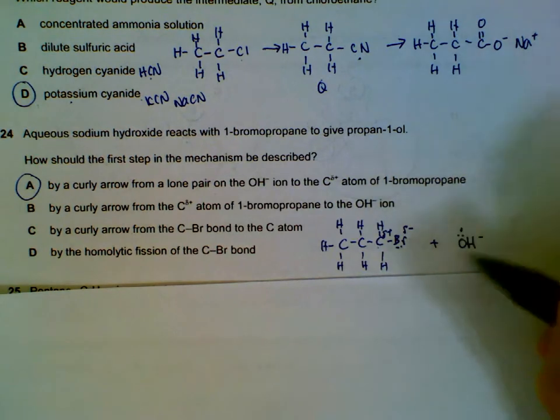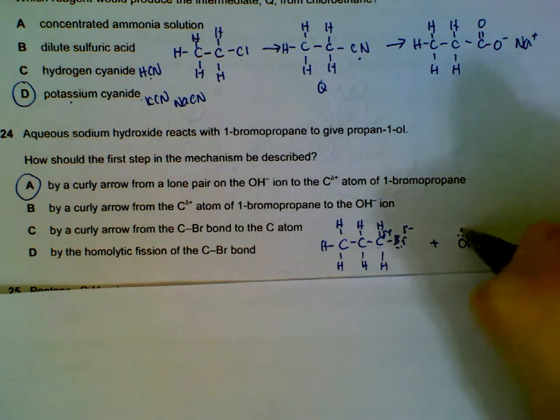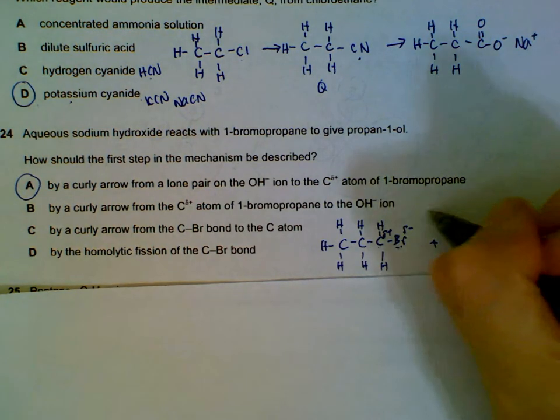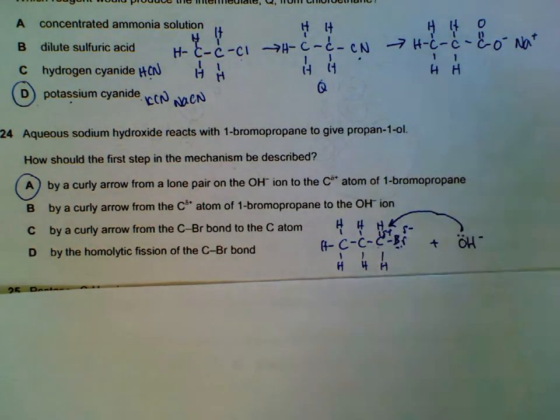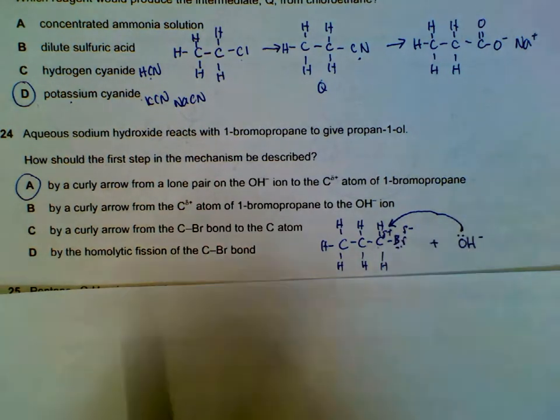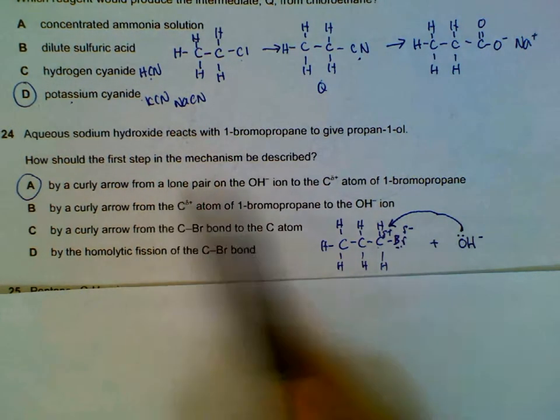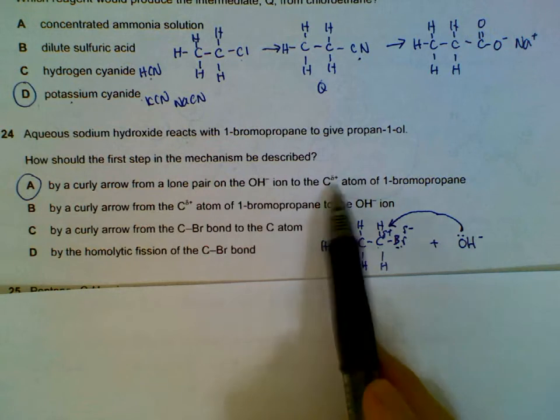This is a nucleophile - it likes positive regions, so it will want to attack the carbon that is currently holding the positive charge. So a curly arrow from the lone pair of the hydroxide to the partial positive carbon.